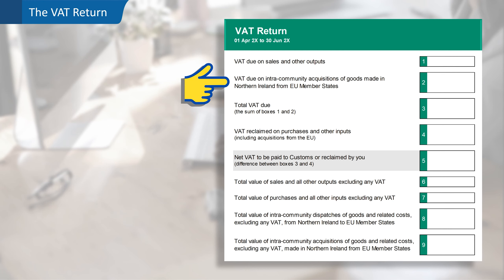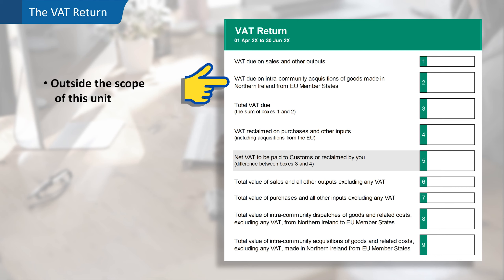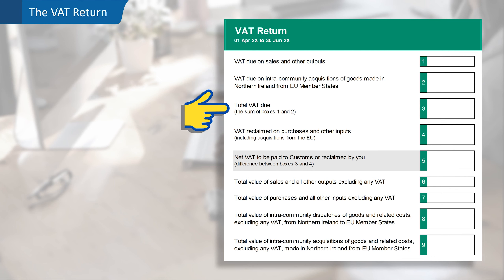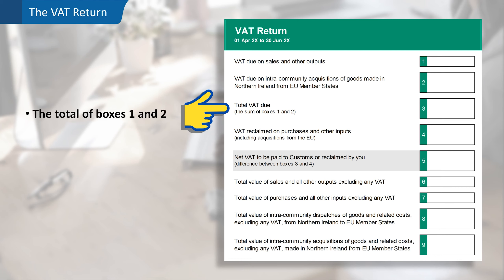Box two is for VAT due on intra-community acquisitions of goods made in Northern Ireland from EU member states. There are special rules for trade between the EU and Northern Ireland, but these are outside the scope of this unit and you won't be expected to know about the figures in this box for your assessment. Box three is for the total tax due and is simply the sum of boxes one and two.